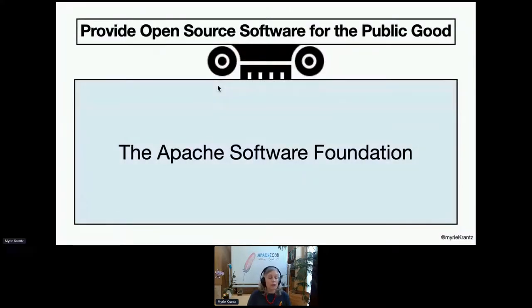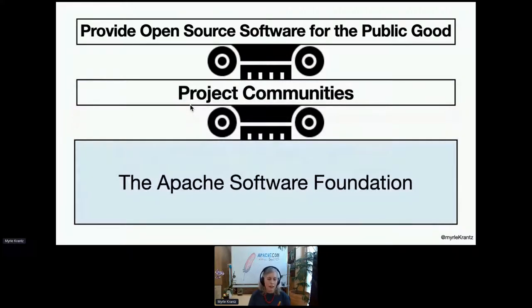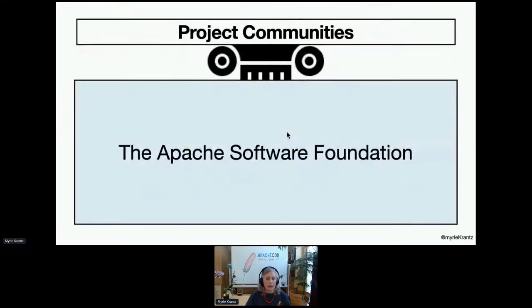What does the Apache Software Foundation do? The Apache Software Foundation provides open source software for the public good — that is their mission. The way the ASF reaches this goal is to support project communities, from Apache Arrow and Apache Cassandra to Apache Fineract and Apache PLC4X and many more. We make it possible for our project communities to focus on the community and the code.